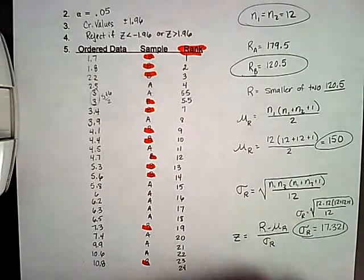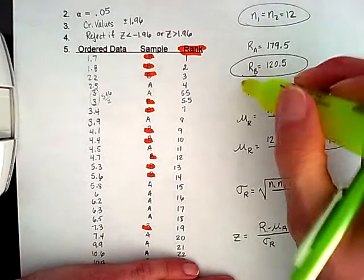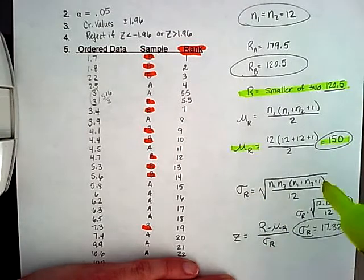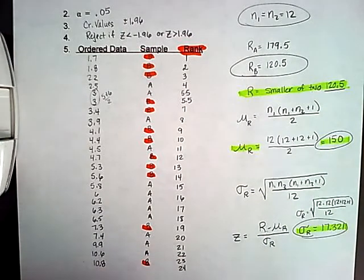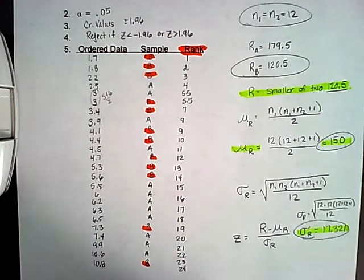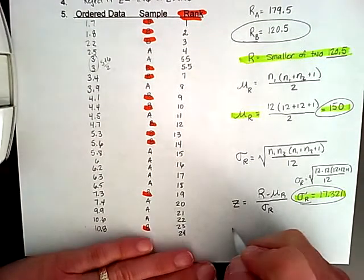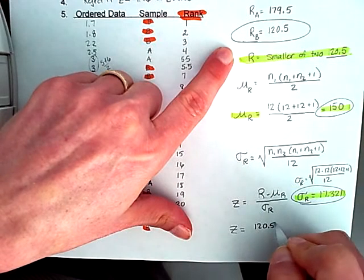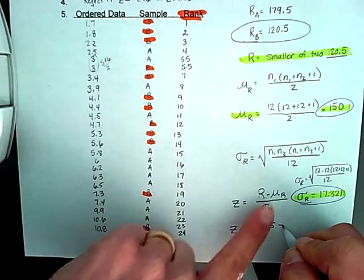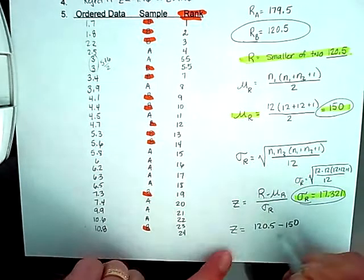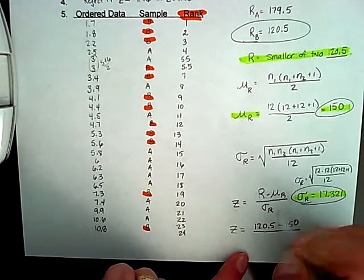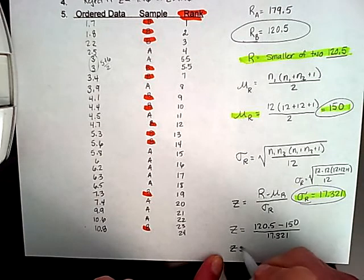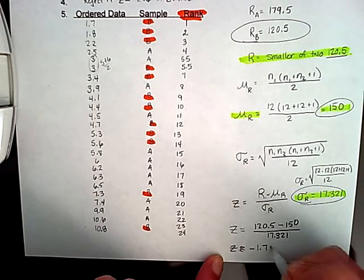I'm going to need those two values right now. I have my R, I have my mean of my ranks, and I have my standard deviation of my ranks. I'm going to use my test statistic for this example, which is a z-score. My z-score is going to be the sum of my rankings, 120.5, minus the mean of my rankings, which is 150, divided by the standard deviation of 17.321. When I calculate that out, I should get approximately negative 1.703.